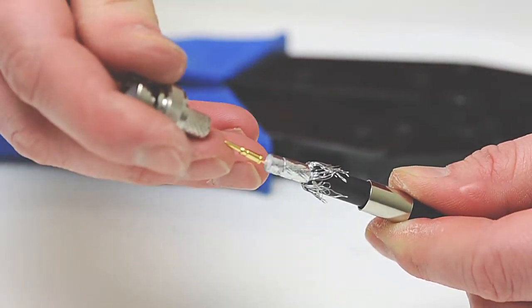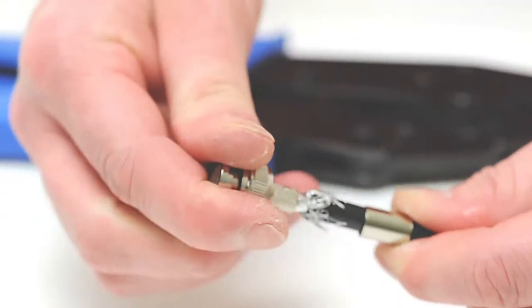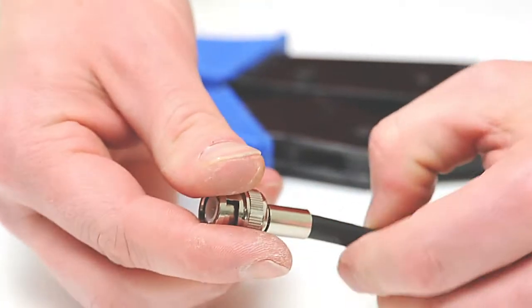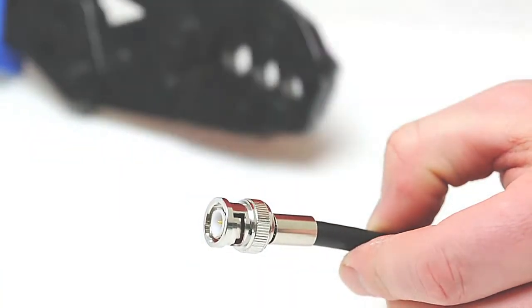Next, take the BNC housing and slide it all the way onto the cable. Slide the ferrule back over the jacket, making sure it holds the braid onto the connector.